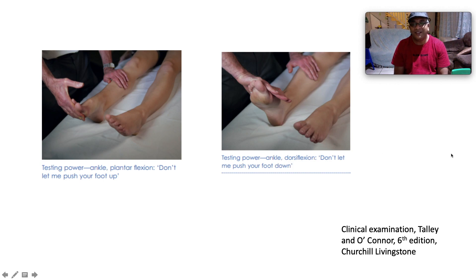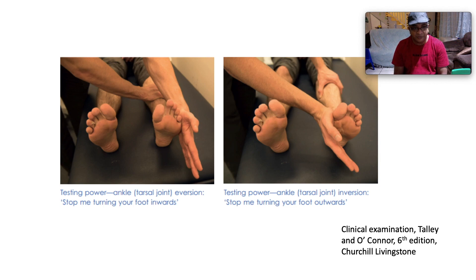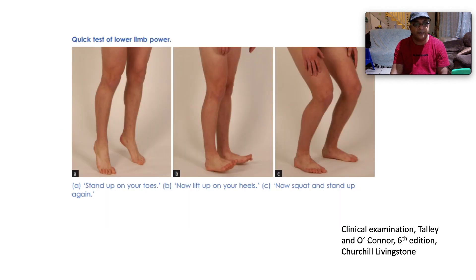For ankle dorsiflexion: don't let me push your foot down. For ankle eversion: stop me from turning your foot inwards. For ankle inversion: stop me from turning your foot outwards. A quick screening test for lower limb power is to ask the patient to stand on their toes, lift on their heels, squat, and stand up again — if all these are well performed, power is 5 out of 5.